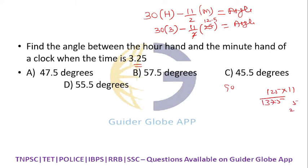137.5. What is the difference? 137.5 minus 90 is 47.5 degrees. This is the answer. Use this formula: 30H minus 11 by 2M is equal to angle.